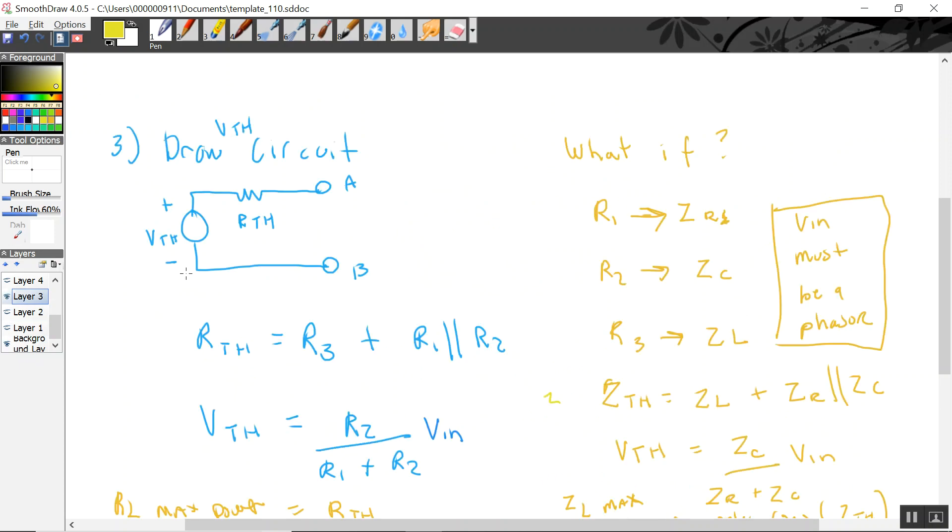So, now we just have to draw the circuit. We have our V-thevenin, which happened to be the voltage division of Vn, and then our R-thevenin, which is R3 in series with the parallel combination of resistors 1 and 2. Now, once we know that, I can find an RL that gives me maximum power, and that's just equal to R-thevenin. So, if this value was 50 ohms, and I wanted to transfer maximum power to RL, it'd be 50 ohms.